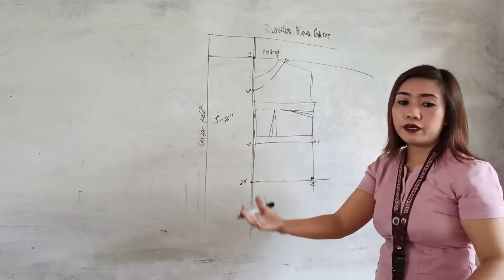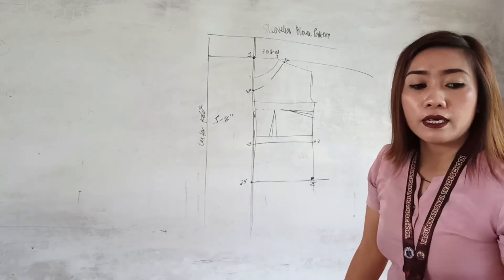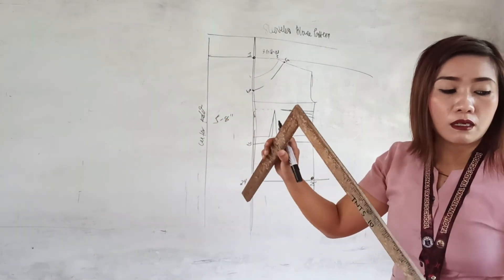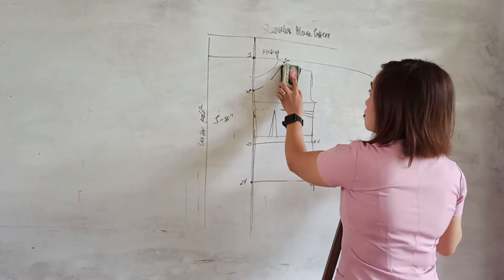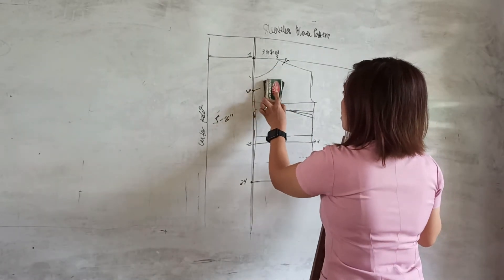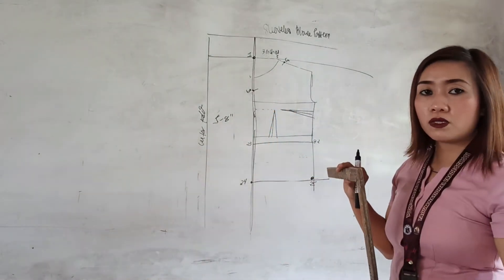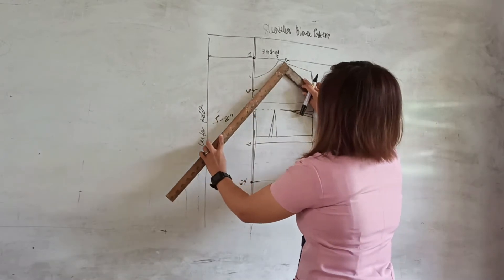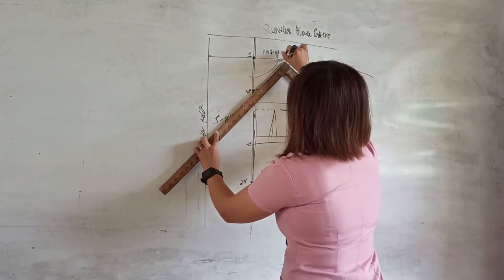Or you have the option of making it a V-neckline blouse. You can just connect 5a to 6a using your ruler or L-square.